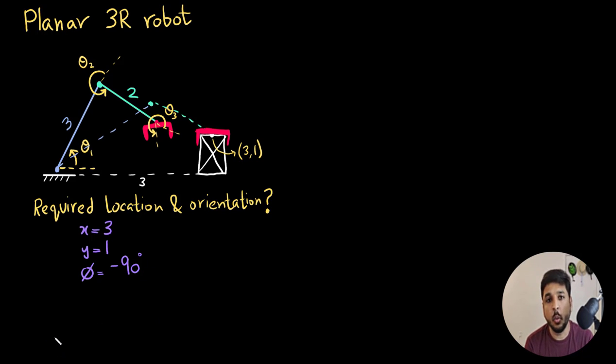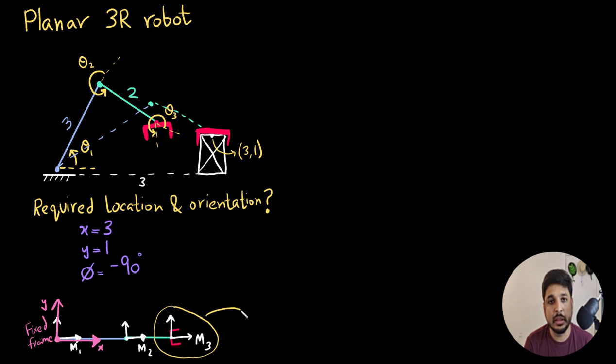If you have trouble understanding why this is minus 90 degrees, it is always a good idea to first draw the robot at the zero configuration as drawn here. Mark out all the moving frames M1, M2 and M3 as well as the fixed frame. So compare this moving frame M3 with the location of the moving frame when the end effector is picking up the object.